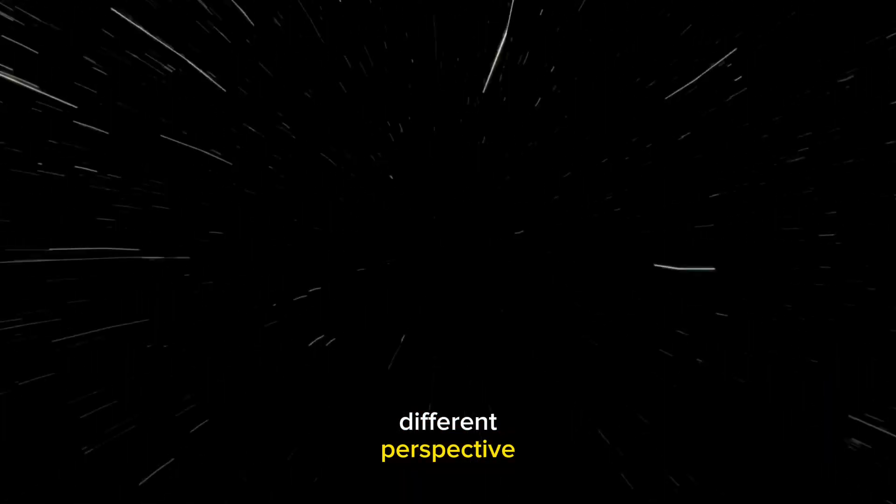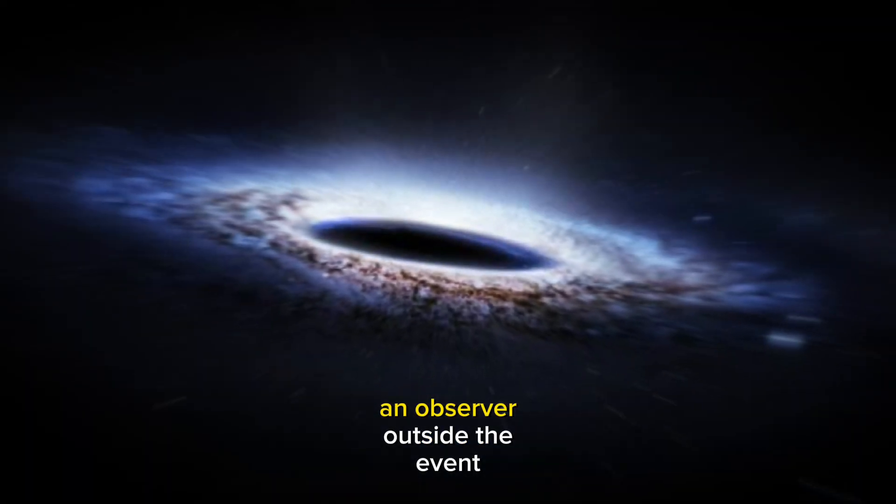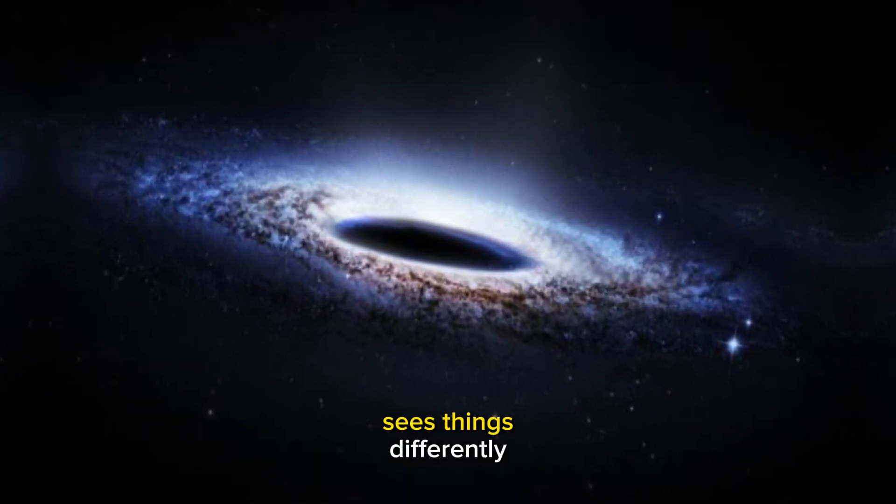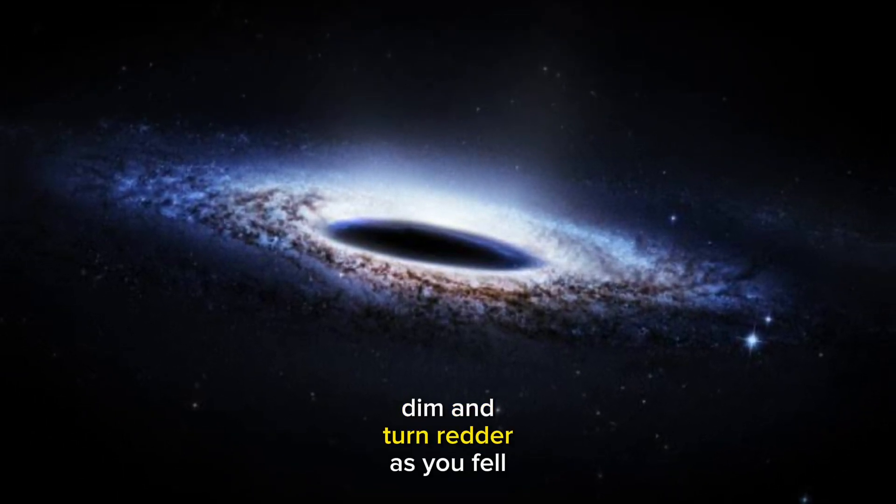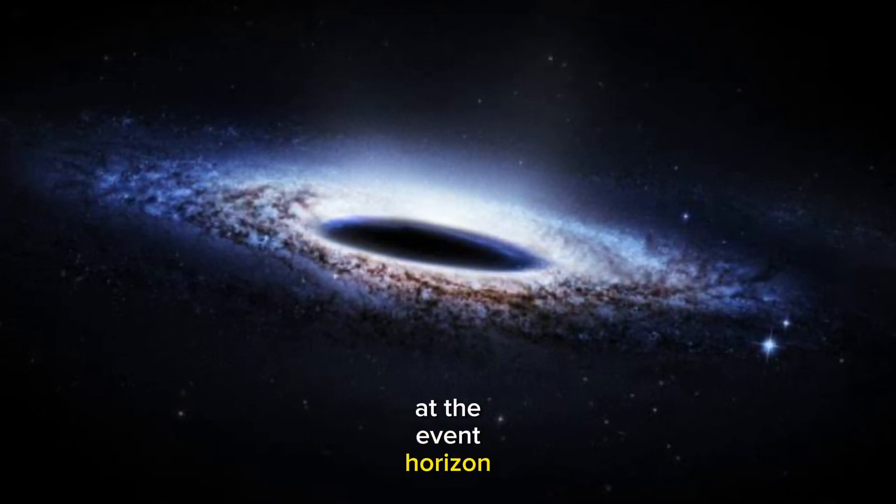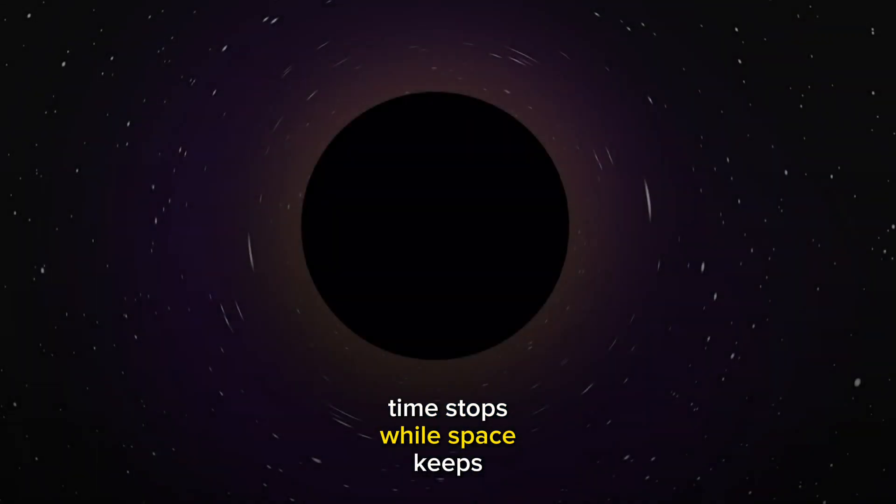Different perspective. Interestingly, an observer outside the event horizon sees things differently. They'd see you slow down, dim, and turn redder as you fell. At the event horizon, time stops, while space keeps moving.